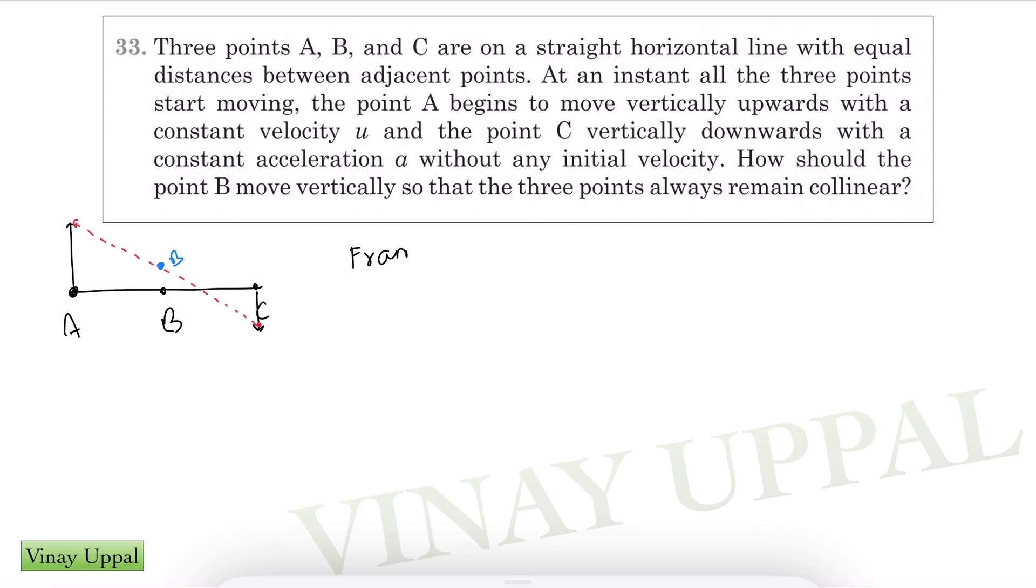In the frame of C, C remains stationary. Now C had an acceleration a downwards, so in this frame of C, A will have a velocity u and acceleration a upwards. If I take upward as positive, in the ground frame acceleration of C was minus a, acceleration of A was zero, so acceleration of A with respect to C would be plus a. That's what I've drawn here. So in time t, A reaches here at this point.